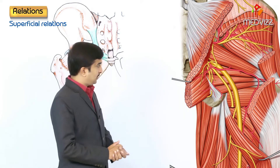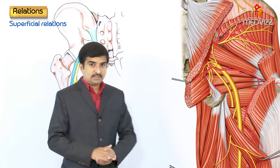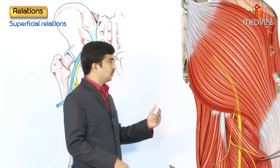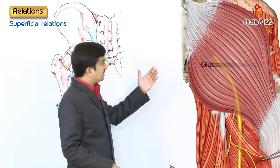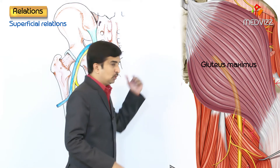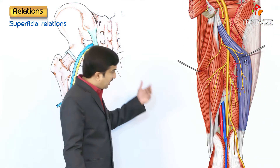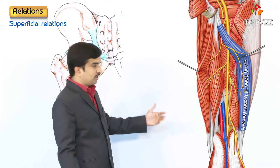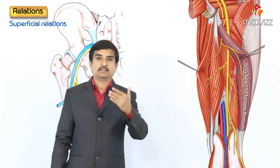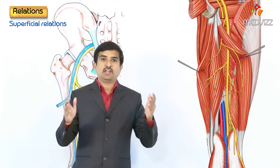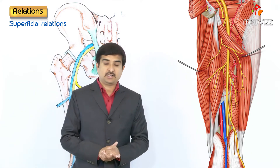As seen in this picture, the superficial relations of the sciatic nerve from above downwards are: the gluteus maximus in the gluteal region, and the long head of the biceps femoris in the thigh. These are the superficial relations of the sciatic nerve.